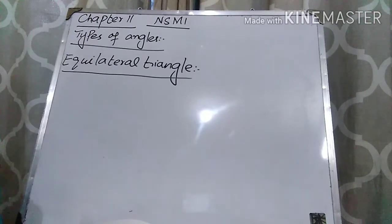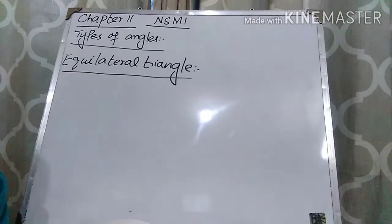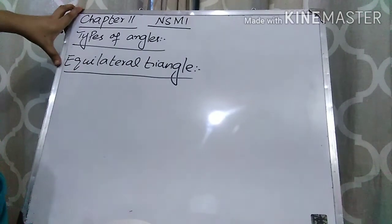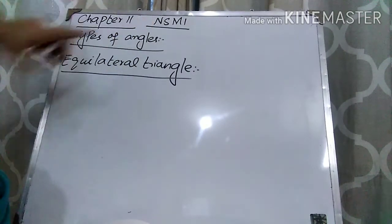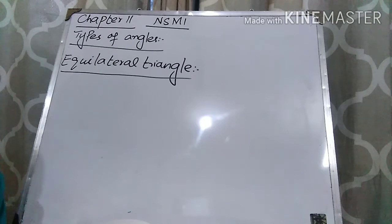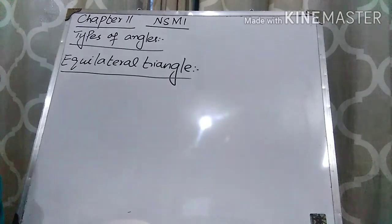Assalamualaikum students, how are you all? I hope that you all are doing great. Welcome to your channel Maths D1D2 Scientific Academy. Today our lecture is related to Chapter 11, which is triangles, quadrilaterals and polygons, and your book is New Syllabus Mathematics 1. Today I'll explain to you the types of triangles. Before starting the lecture, I would request you that if you want more help regarding your subject, you can subscribe the channel. There are six types and I'll explain them one by one.